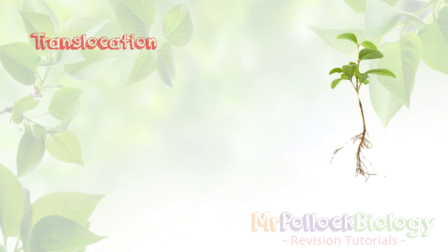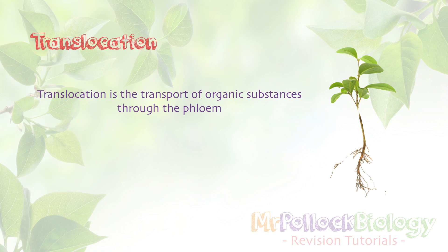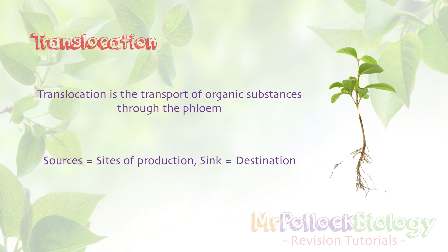Translocation is basically how stuff is moved in plants that isn't water — the transport of organic substances through the phloem. These organic substances move from places called sources, where they are produced, to sinks, which is their destination. For your AQA new specification, you only have to imagine this whole process happening in one direction.